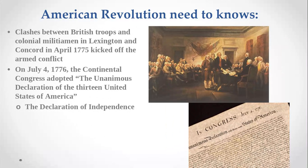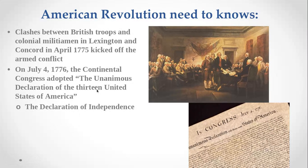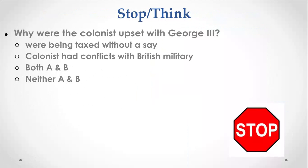Things actually got worse for the colonists before that — British troops were attacking acts of protest. It really hit the breaking point at Lexington and Concord, when troops opened fire on civilians that were protesting. That's where the colonists finally said, 'We're breaking apart.' When this Declaration was sent to King George III, it sparked a war. Question: why were the colonists upset with George III?